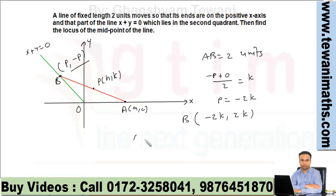Now BP distance is 1 because AB distance is 2 and P is the midpoint. So from the distance formula, we have (-2k - h)² + (2k - k)² = 1.